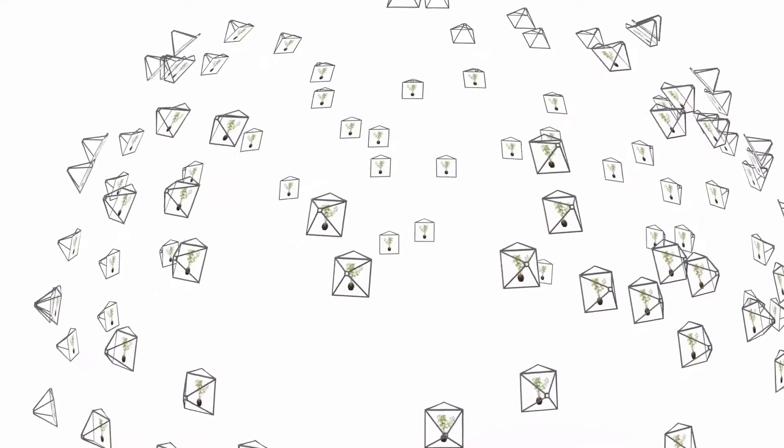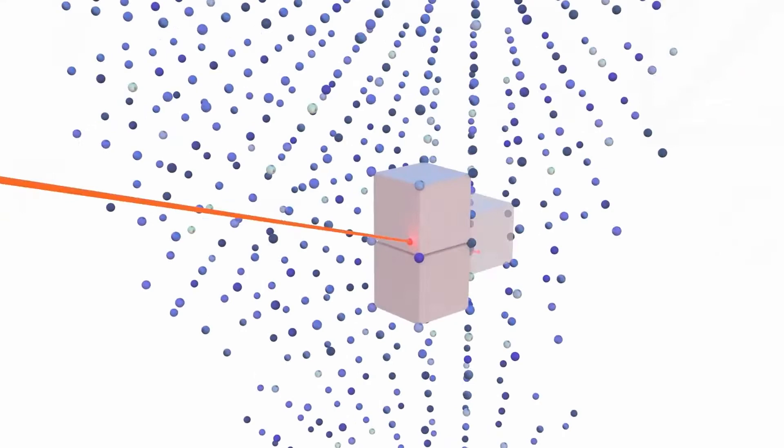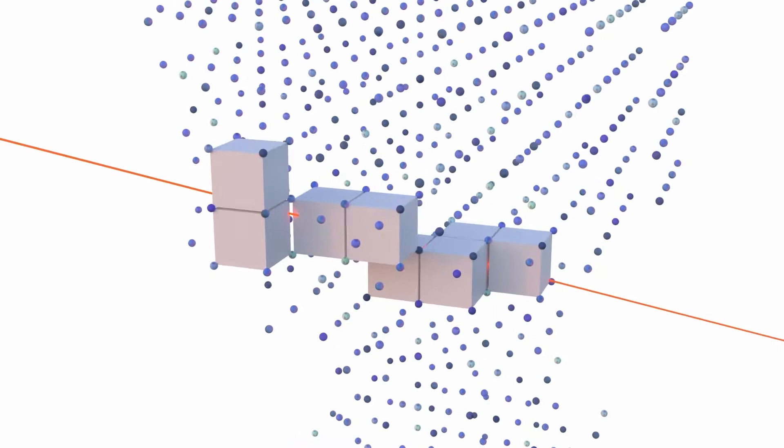Our plenoxel model is optimized using calibrated images of a scene. To render a pixel, we intersect its ray with the voxels in our model, each of which stores opacity and spherical harmonic coefficients.